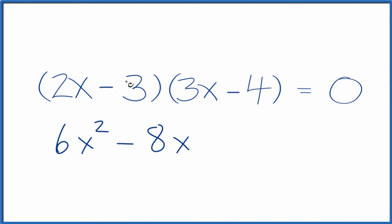Back to the inside, negative 3 times 3x is negative 9x. And then the outside, negative 3 times negative 4. That's a positive 12.